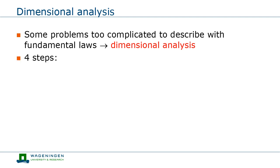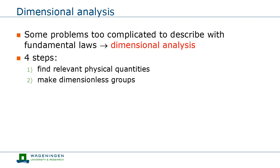Dimensional analysis usually consists of four steps. First, we need to identify the relevant quantities. Sometimes this is easier said than done. When your list of relevant quantities is too short, you will discover that your results do not converge to a unique solution. And when your list is too long, you will discover that one or more variables do not influence results at all. Then, from your list of relevant quantities, you need to make dimensionless groups — groups in which you multiply or divide your quantities such that the group as a whole is dimensionless. When you only have one dimensionless group, that group should be constant.